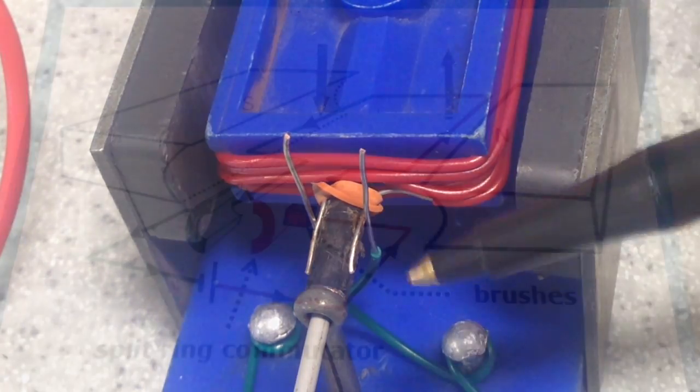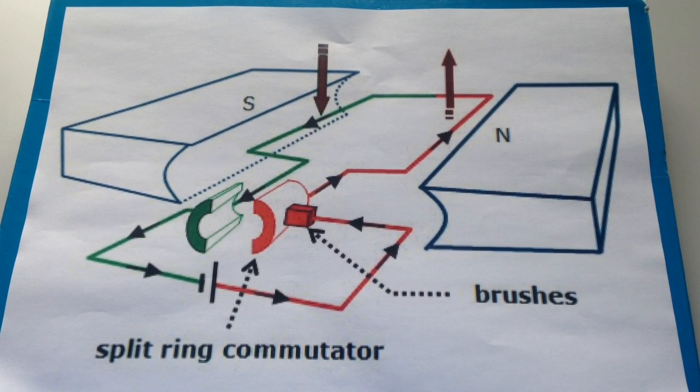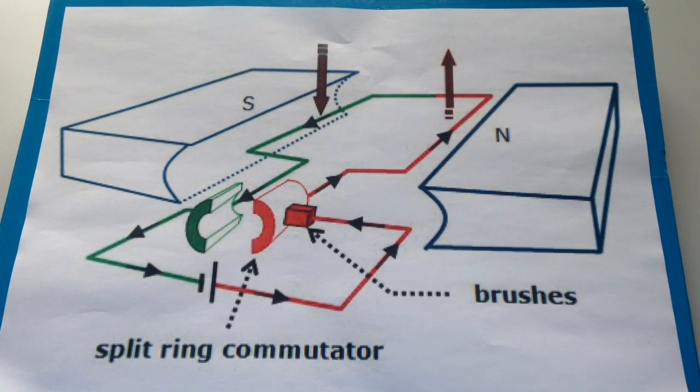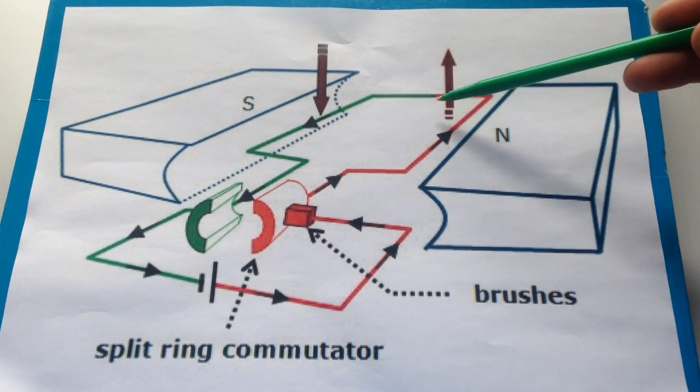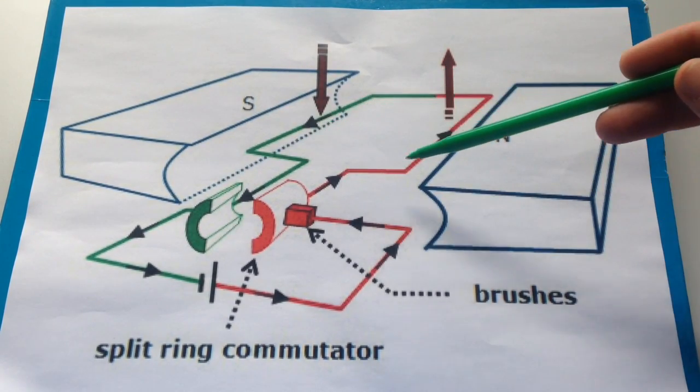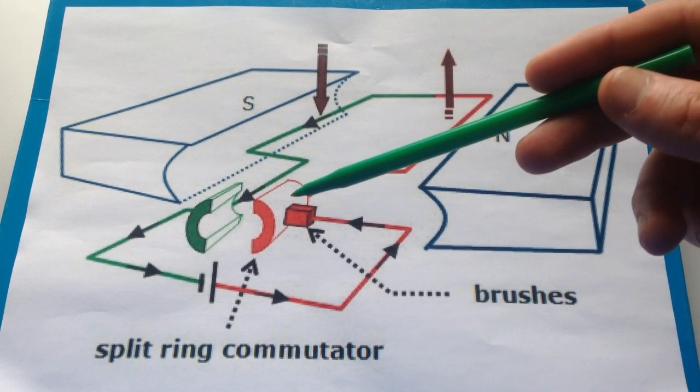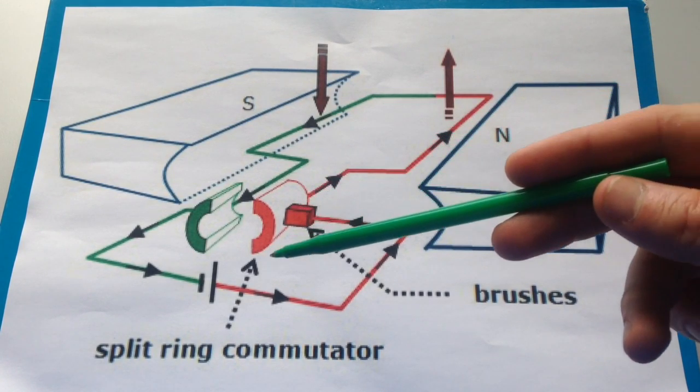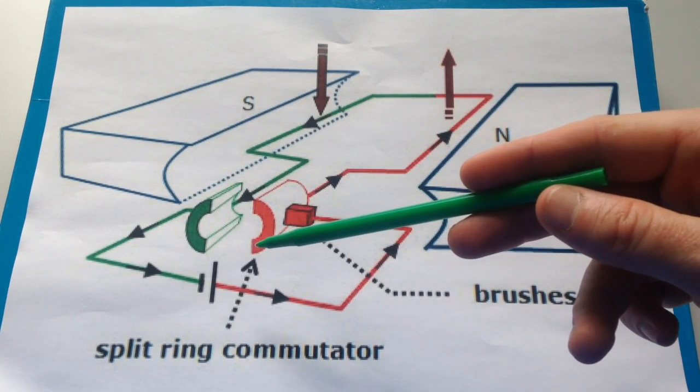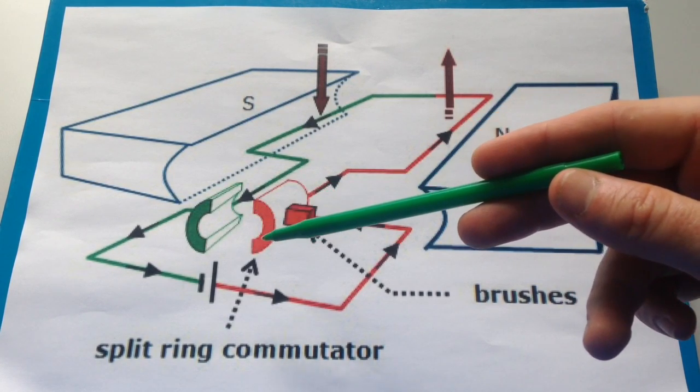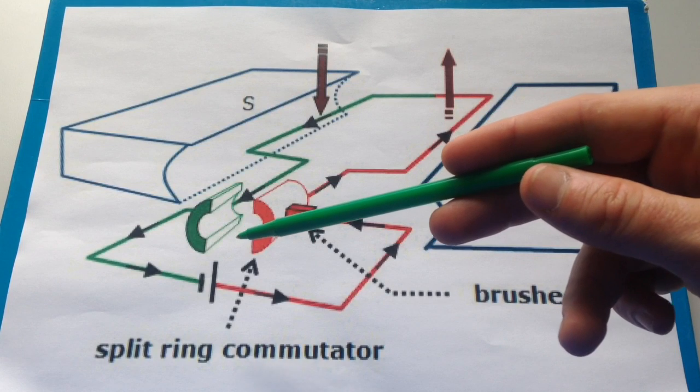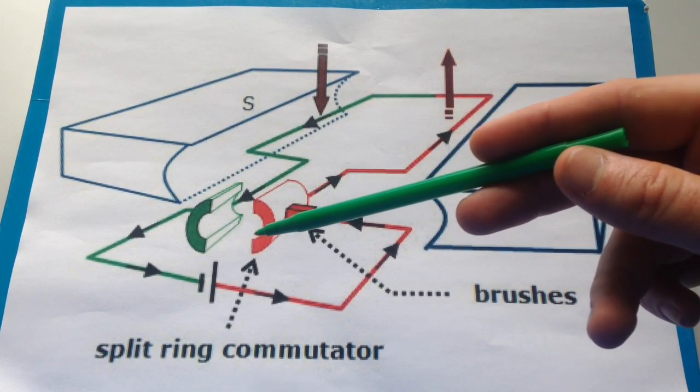Let's have a look at what a diagram of your motor would look like. So we've got the magnet, the same as on your actual motor. We've got the red wire that's coiled around the blue rectangle here. And then over this side, we've got the split ring commutator, which you can see on the diagram is drawn as a ring shape that has been split in half. That's a bit different to the motors that you made.